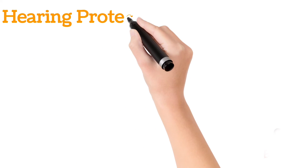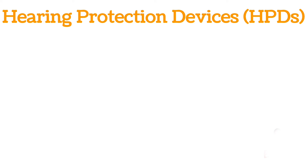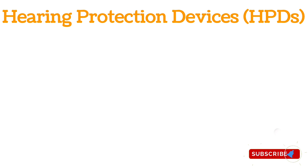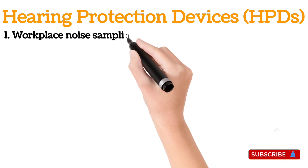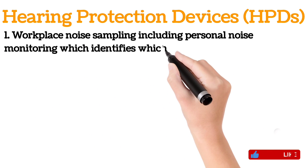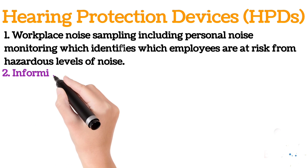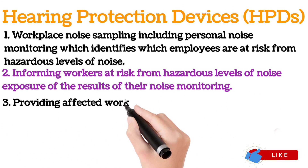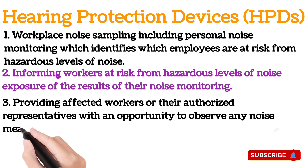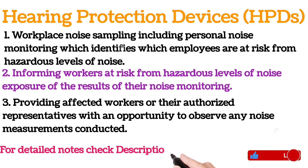Hearing protection devices such as earmuffs and plugs are considered an acceptable but less desirable option to control exposures to noise. They are generally used during the time necessary to implement engineering or administrative controls, or when such controls are not feasible, or when workers' hearing tests indicate significant hearing damage. Key elements of an effective hearing conservation program include workplace noise sampling including personal noise monitoring, which identifies which employees are at risk from hazardous levels of noise, informing workers of the results of their noise monitoring, and providing affected workers or their authorized representatives with an opportunity to observe any noise measurements conducted.